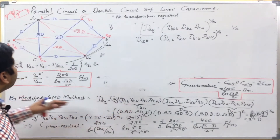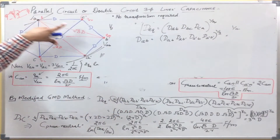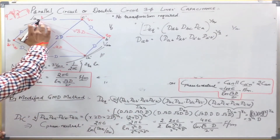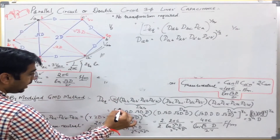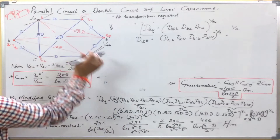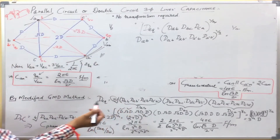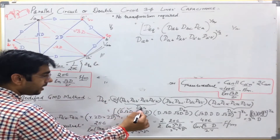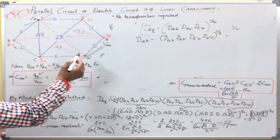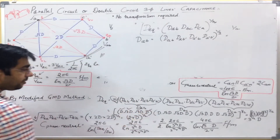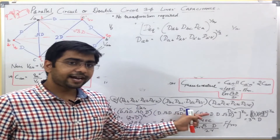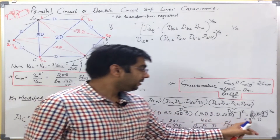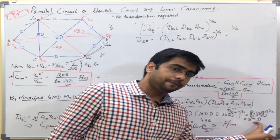On putting the values: D_AB equals D, D_AB-dash equals root 3D, D_Adash-B equals root 3D, and D_Adash-Bdash equals D. Similarly writing all remaining expressions and solving, D_equivalent comes out to be 3 raised to power 1/4, times D.